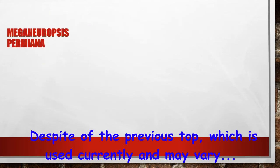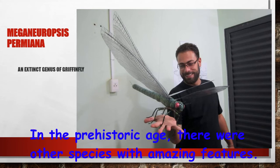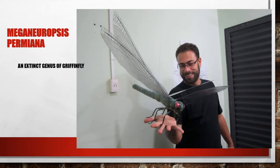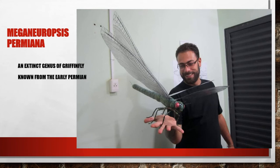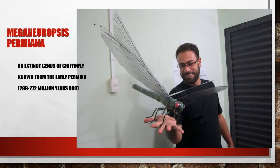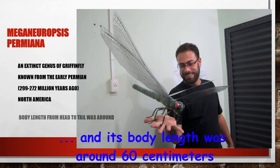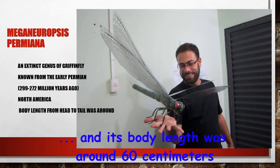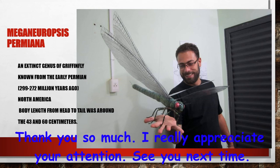Despite the previous top list — which is currently used and may vary according to different experts — in the prehistoric age there were other species with amazing features. I want to show you the Meganeuropsis permiana. In the photo you can see a model based on fossils found. This giant dragonfly was an extinct genus of griffinfly, known from the early Permian, about 299 to 272 million years ago. It lived in Kansas, North America, and its body length was around 60 centimeters, with a wingspan of around 70 centimeters. Thank you so much — I really appreciate your attention. See you next time!